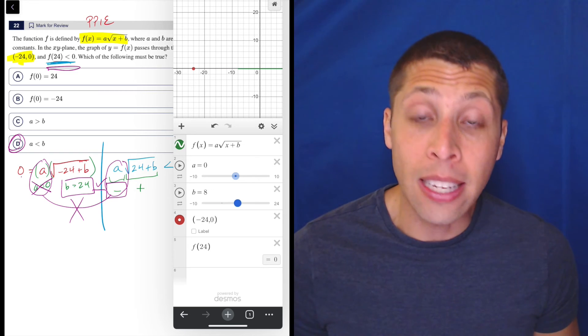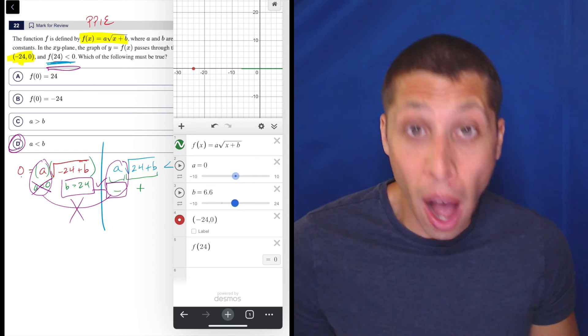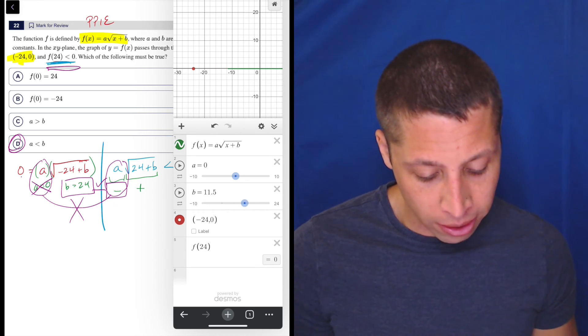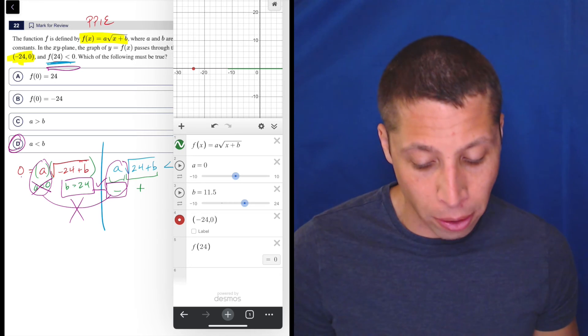So, this is basically testing the other situation I thought could happen. If A were 0 and B were something else, then it looks like F of 24 is equal to 0 no matter what. But remember, F of 24 has to be less than 0.